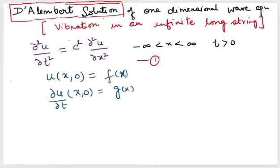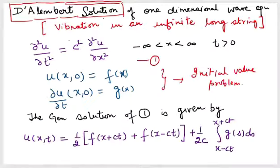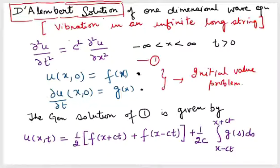I will directly give you the solution because the goal of this video is to learn how to apply the formula to get a specific solution. The general D'Alembert solution is: u(x,t) = (1/2)[f(x+ct) + f(x−ct)] + (1/2c) ∫ from x−ct to x+ct of g(s) ds. Here f is the initial position and g is the initial velocity.